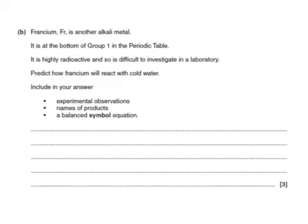Francium's another alkaline metal. It's at the bottom of Group 1 of the periodic table. It's highly radioactive, so difficult to investigate in a laboratory. Predict how it will react with cold water. You'd expect it to float, skates on the surface, dissolve.